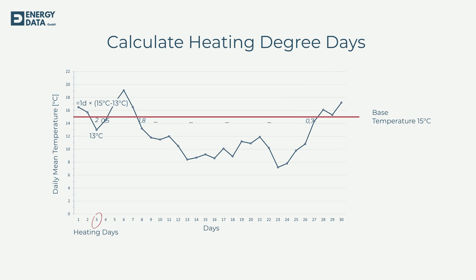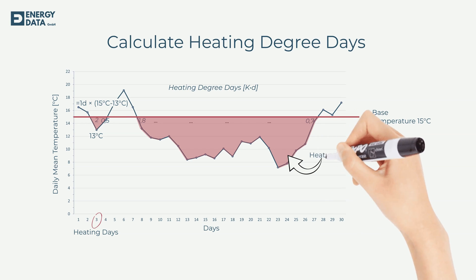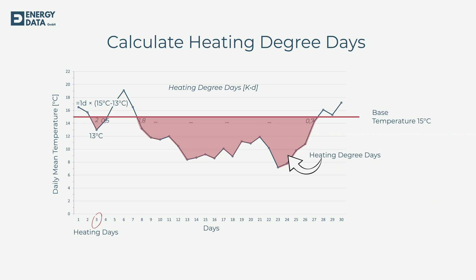This calculation is done for every single day. Days where the outside temperature does not drop below the base temperature are counted as 0. Degree days are a measure of how many days in a given period the outside temperature was how many degrees below or above your base temperature. You can do this on a daily basis, but for most analyses, we sum the degree days up to a weekly, monthly, or even annual number.